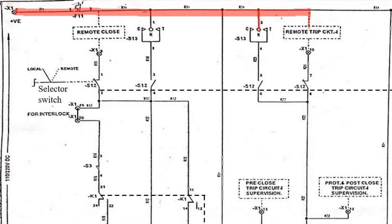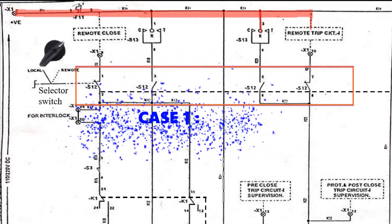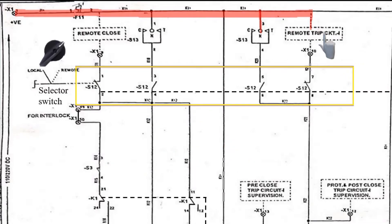Now here the current has two paths to flow, but the direction of current depends upon which path is selected, which is decided by the selector switch S12. Let us consider a case where the selector switch S12 is connected in remote mode. Then its contact S12 will be in this position.